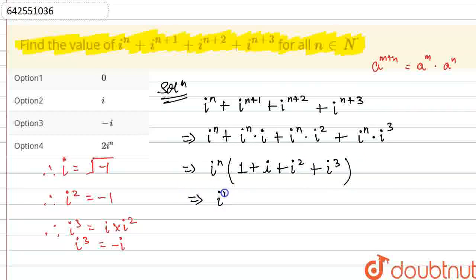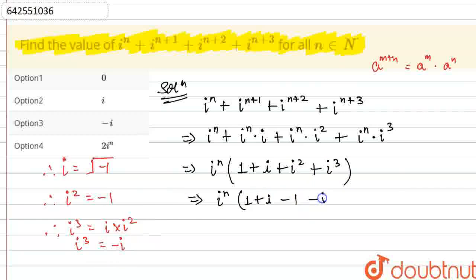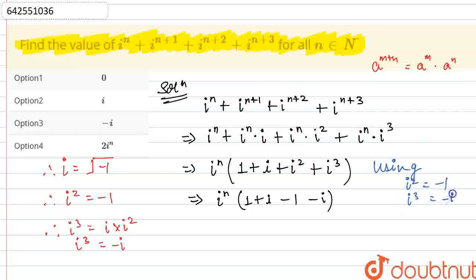This will remain as it is — iota raised to the power n, multiplied by 1 plus iota. Now, iota squared, as already mentioned, equals minus 1, so we write minus 1 here. And iota cubed equals minus iota, so we write minus iota. What we have used is: iota squared equals minus 1, and iota cubed equals minus iota.